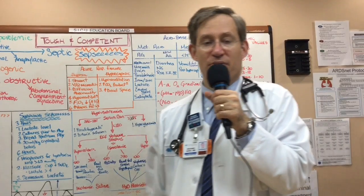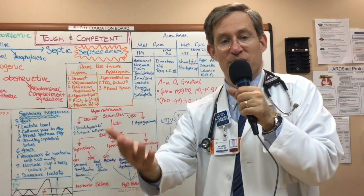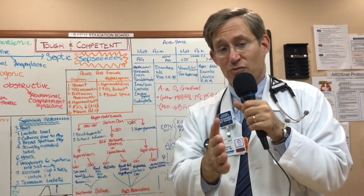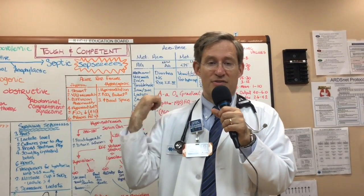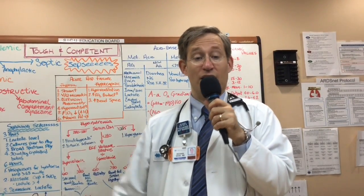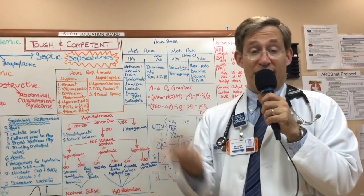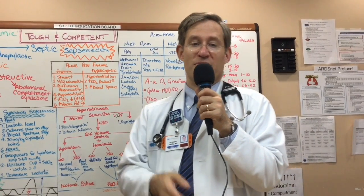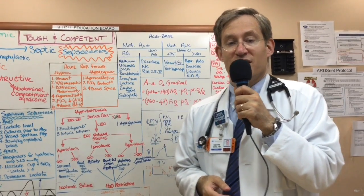Type 4 RTA equals hypoaldosteronism. The question is whether it's primary hypoaldosteronism, adrenal insufficiency from sepsis, or drug-induced hypoaldosteronism. When you're on call, you will be called about a patient with elevated potassium and a normal creatinine — think Type 4 RTA due to a drug. Common drugs include ACE inhibitors, NSAIDs, and importantly, heparin. Heparin-induced hypoaldosteronism is an important cause of hyperkalemia of otherwise unclear etiology in the ICU.